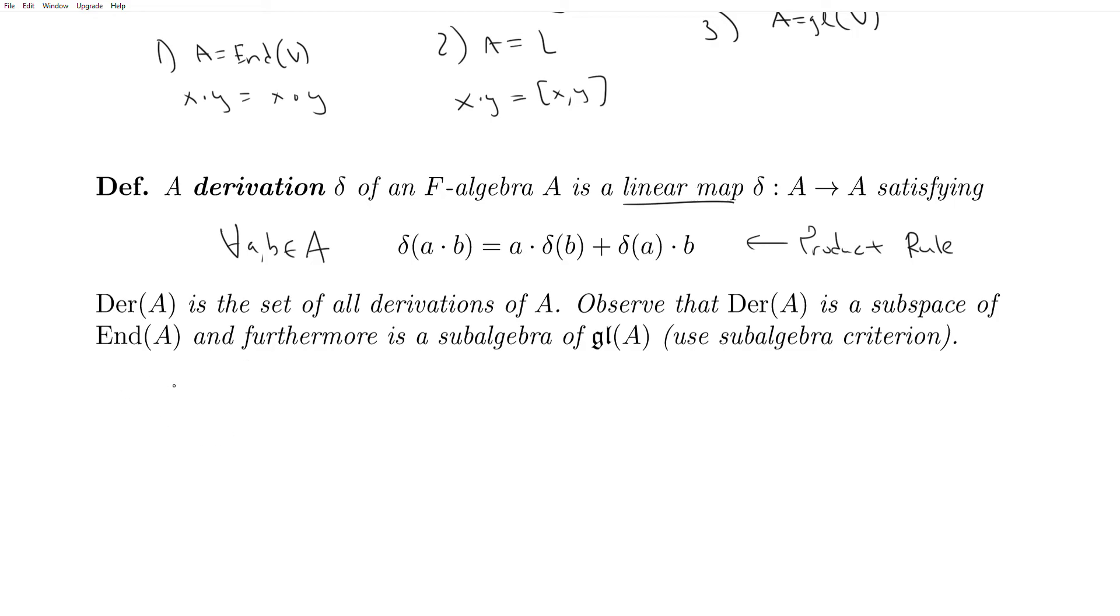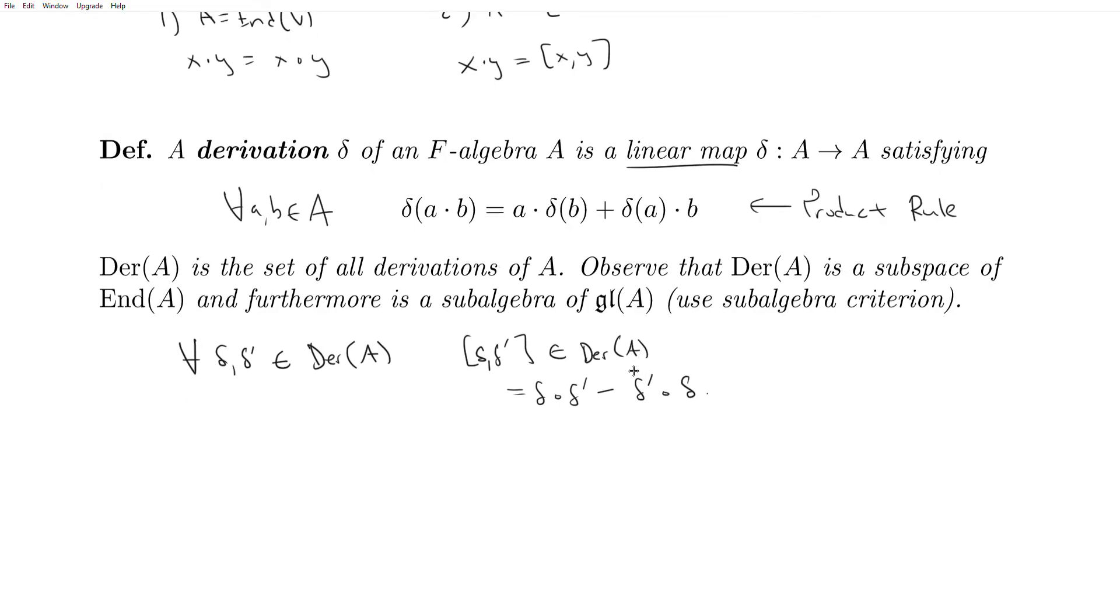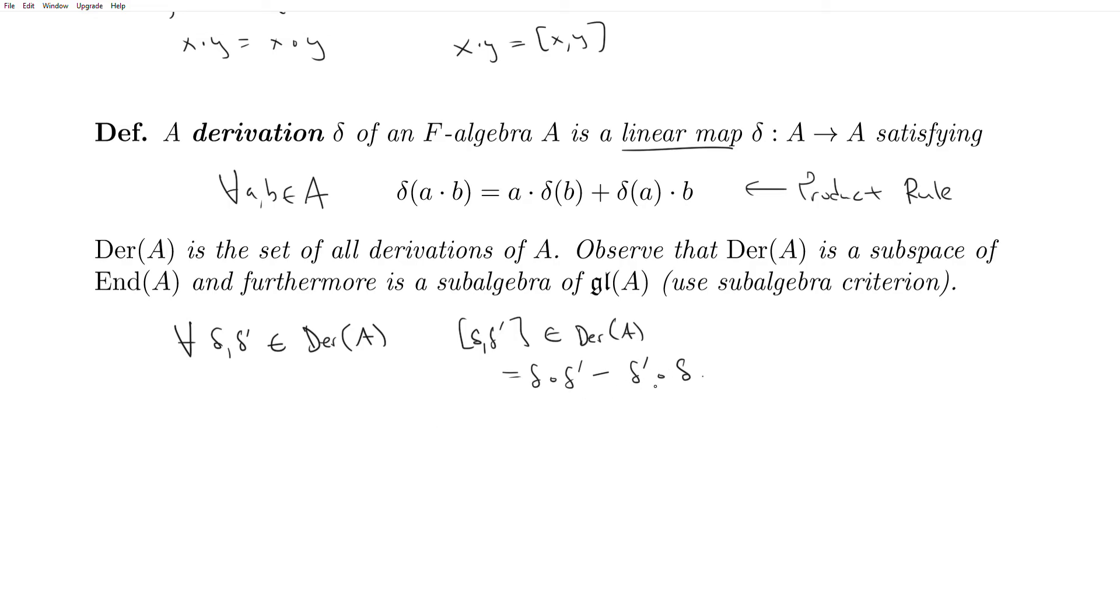And so the way you check this is that you say for all delta, delta prime in Der(A), you want to check that delta bracket delta prime is an element of Der(A). And so this thing here is equal to delta composed of delta prime minus delta prime composed of delta. That's the bracket we endowed on GL(A). And so the way you check that this thing is a derivation is to just verify the product rule.